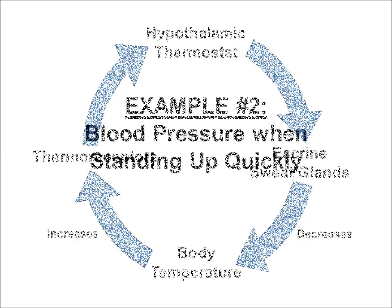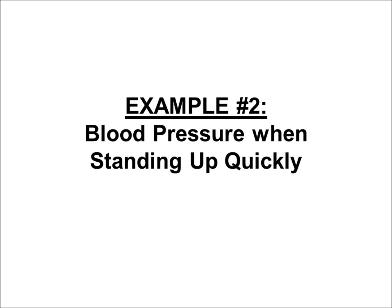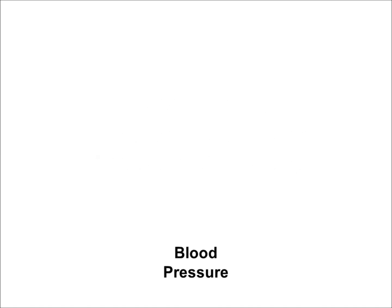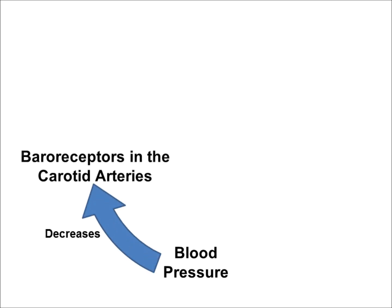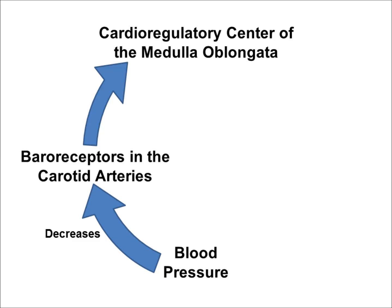Let's do another one. Let's talk about what happens to your blood pressure when you've been sitting for a while, like in class, and then you stand too quickly. Your blood pressure will drop. That decrease in blood pressure is detected by baroreceptors — pressure receptors. I want to focus on the baroreceptors in the carotid arteries, which take blood to the brain. Those baroreceptors detect that drop in blood pressure and communicate with the cardioregulatory center of the medulla oblongata in the brain — the part of the brain that oversees cardiac function. In this circumstance, we need to raise blood pressure after it's dropped. So the cardioregulatory center communicates with the heart and directs cardiac muscle to contract more often, thereby increasing heart rate and thereby increasing blood pressure.